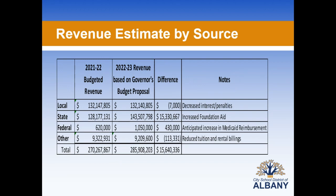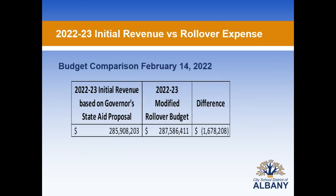When we look at the revenue estimate by source, we see a significant increase in state aid for next year of $15.3 million, largely attributed to the increase in Foundation Aid, and an increase anticipated in our Medicaid reimbursement of $430,000. That estimated aid is based on where we look to end this fiscal year. We also have a slight reduction in tuition and rental billings, for a year-over-year increase of $15.6 million. Comparing our initial revenue with our modified rollover expense, we have a gap of approximately $1.67 million.